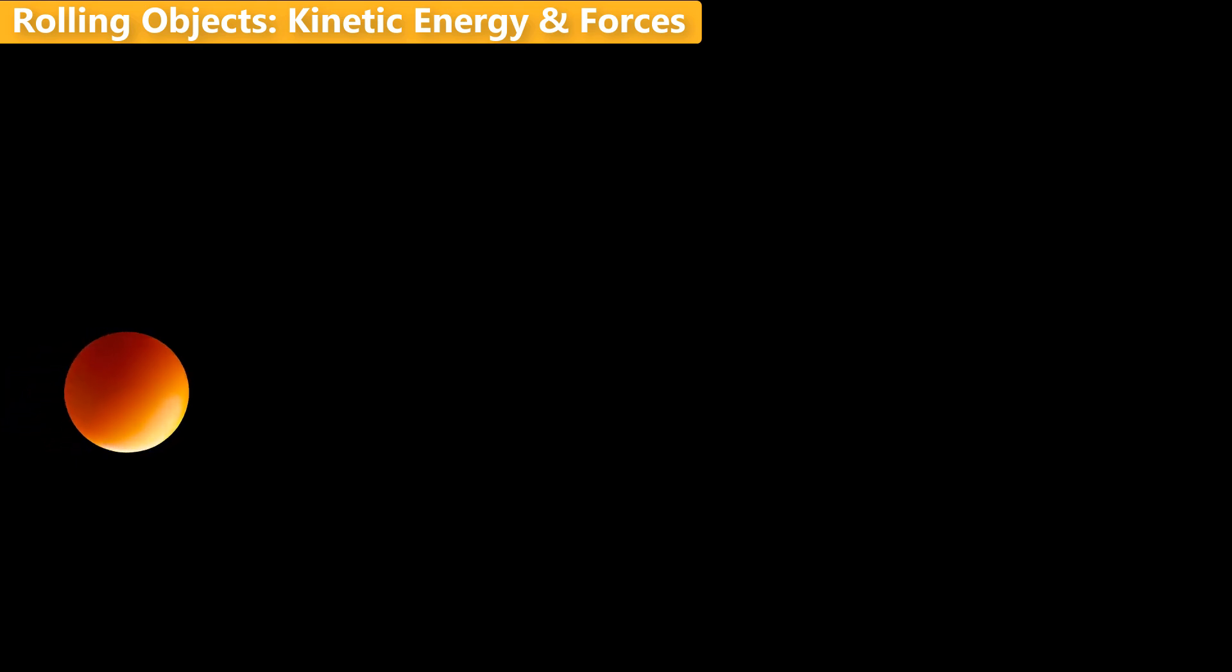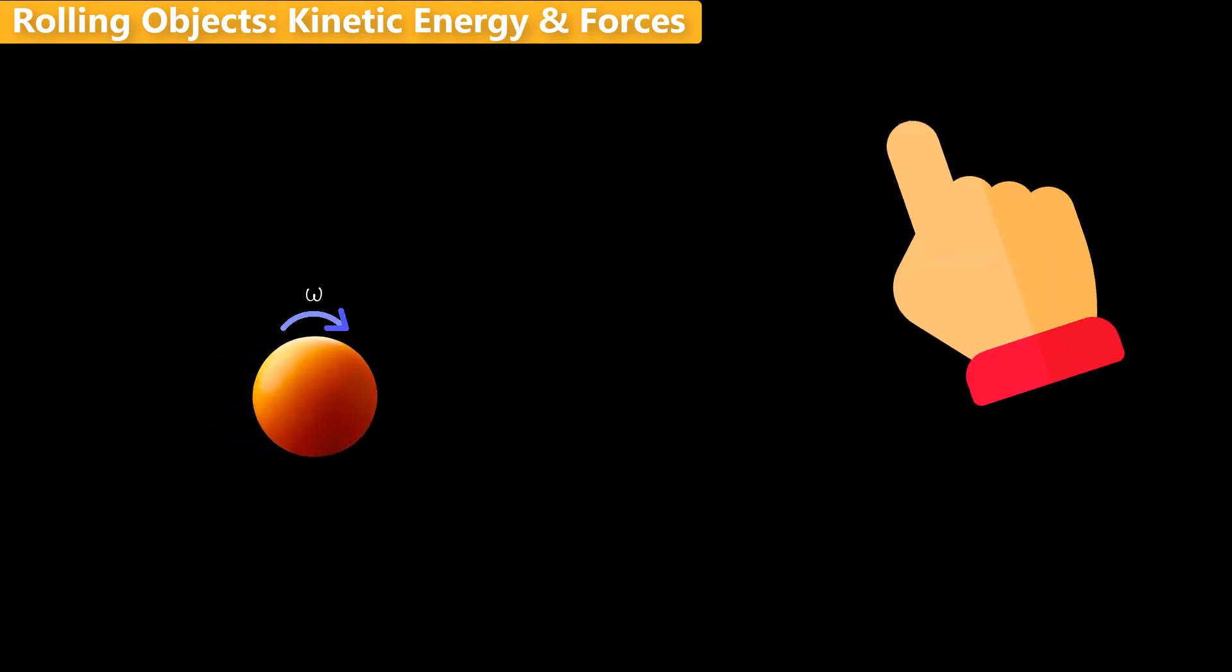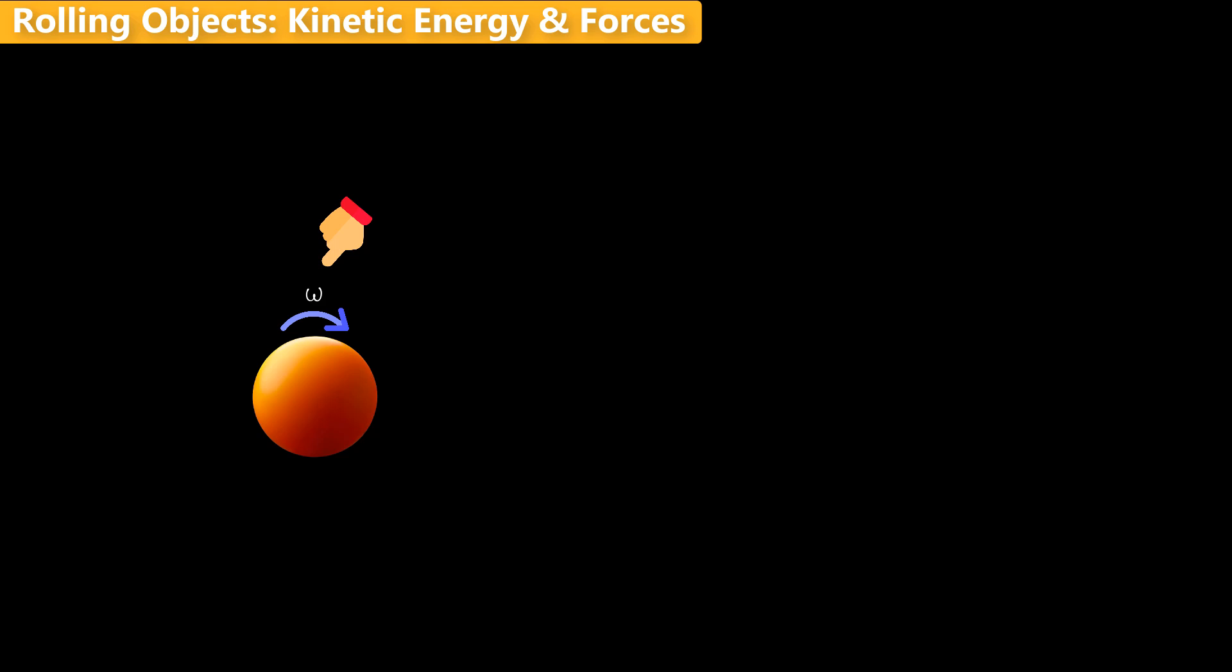A rolling object has two types of kinetic energies. One you can associate with its rotation about its center of mass and call it the rotational kinetic energy. And this equals half I omega squared.